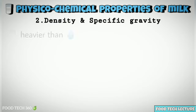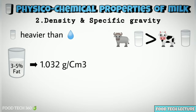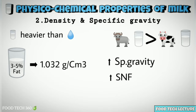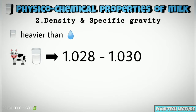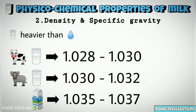Density and specific gravity. Milk is heavier than water. Density of milk with 3–5% fat is 1.032 g per cm³. Buffalo milk contains more fat than cow milk and hence has a higher specific gravity because buffalo milk contains more SNFs. Average specific gravity at 15.5°C ranges between 1.028 to 1.030 for cow milk, 1.030 to 1.032 for buffalo milk, and 1.035 to 1.037 for skim milk.